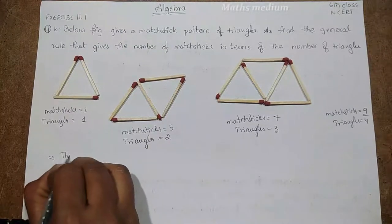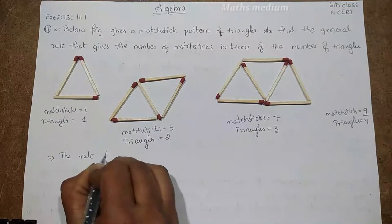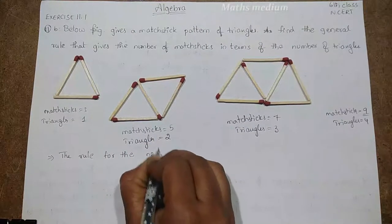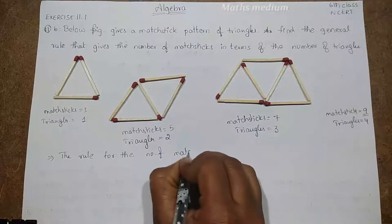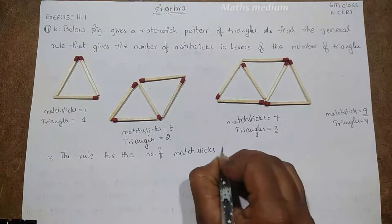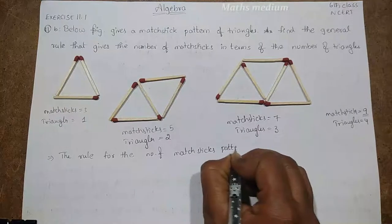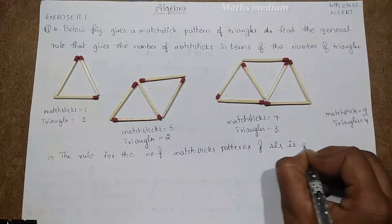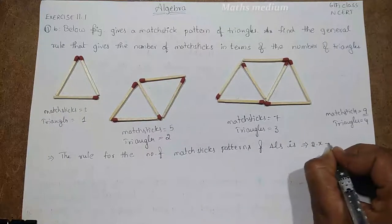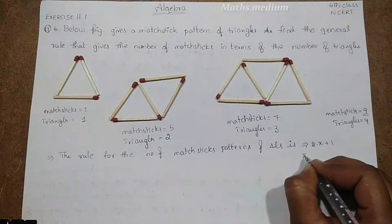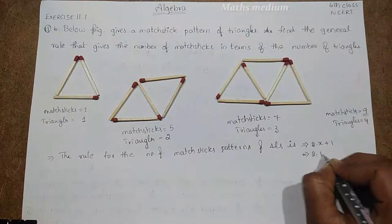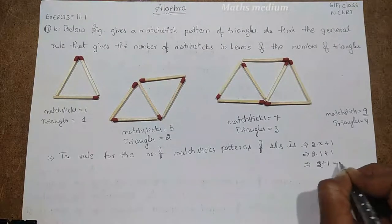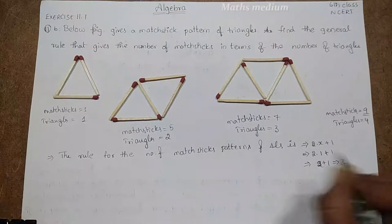So the rule for the number of matchsticks pattern of triangles is 2 into x plus 1. So 2 into 1 plus 1, it is equal to, sorry, 2 plus 1, it is equal to 3. That is this one.